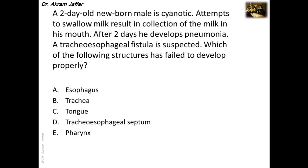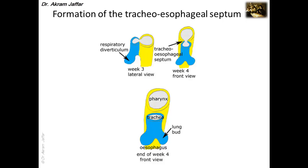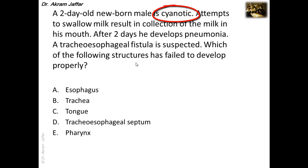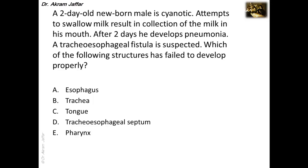The lung bud develops from the region of the foregut and then separates from the esophagus by the formation of the tracheoesophageal septum. Failure of development of this tracheoesophageal septum will result in the formation of a fistula between the esophagus and the respiratory system with the trachea. This is responsible for the cyanosis in this case and also for the development of pneumonia because of the connection between the esophagus and the trachea. The tracheoesophageal fistula might or might not be associated with atresia of the esophagus.